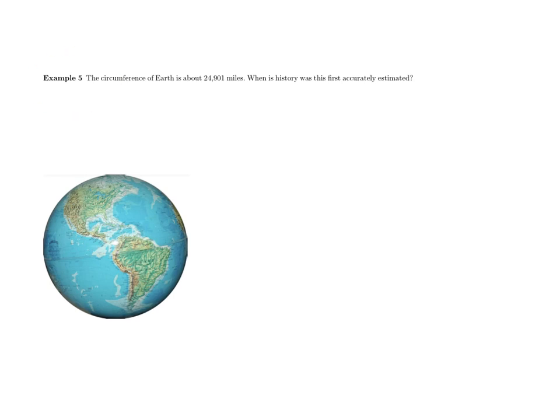For the last example, here's an interesting application and piece of trivia. The circumference of Earth is about 24,901 miles — the distance around the planet along a great circle like the equator. When in history was this first accurately estimated? It was figured out by the ancient Greeks — specifically by Eratosthenes, around 200 BC. That's a very long time ago, making it a pretty surprising result.